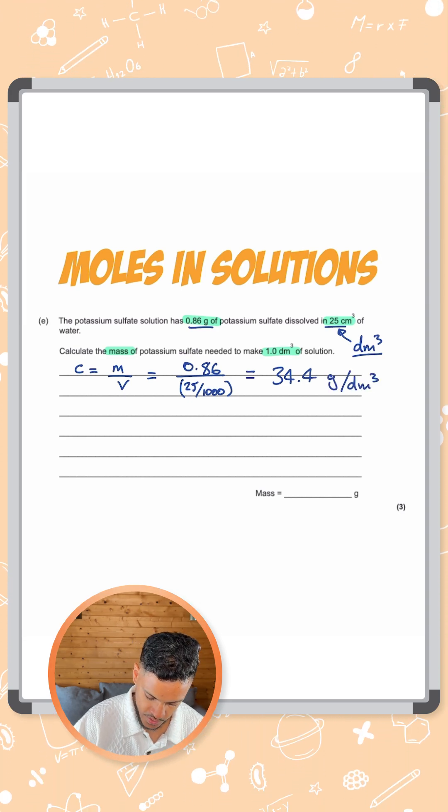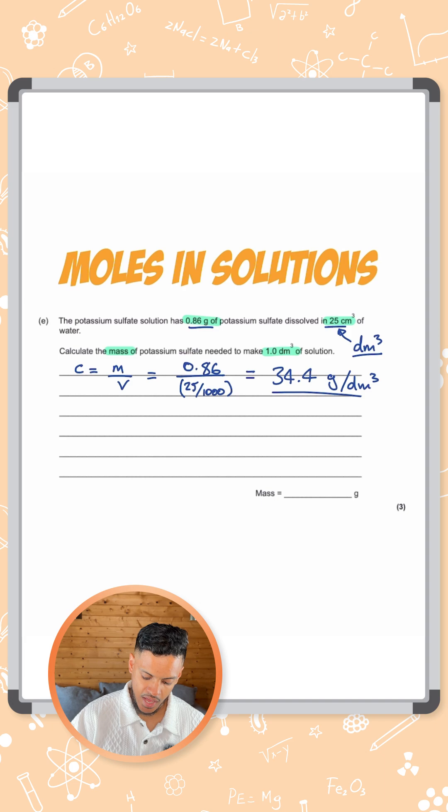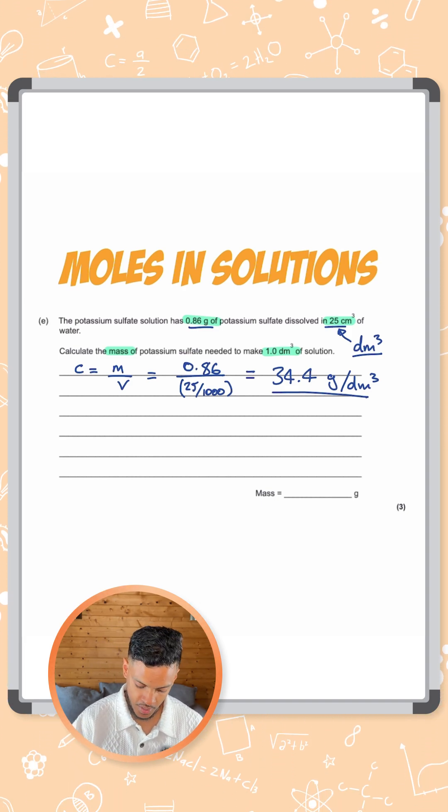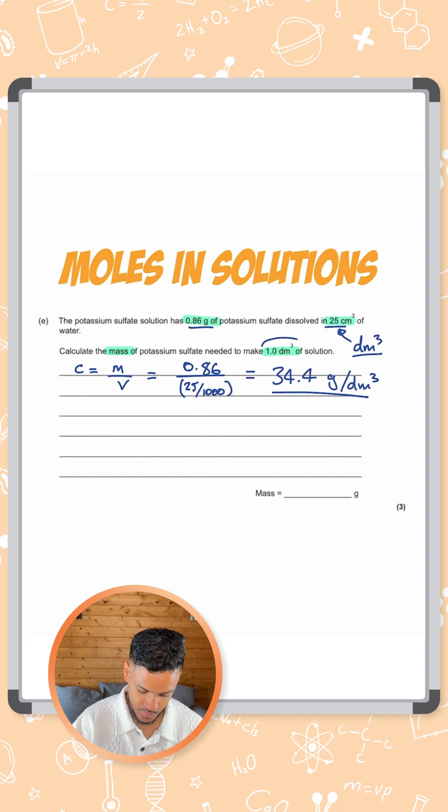Now what we want from this question is a solution with the same concentration, 34.4 grams per dm cubed, but we want 1 dm cubed of it.